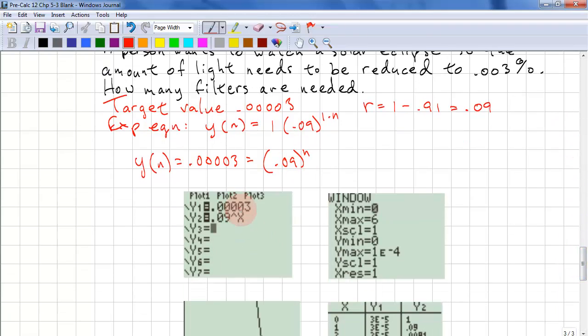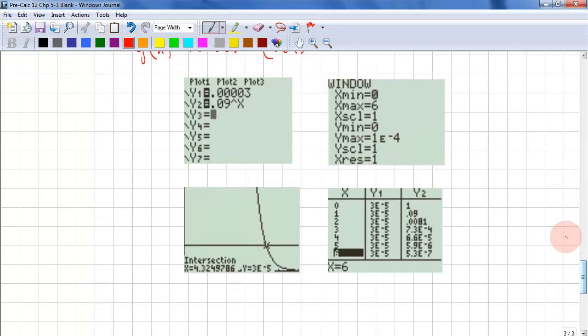equals 0.00003 equals 0.09 to the power of n. Again, we enter this on the calculator. y1, y2. And I'm just approximating that we need no more than six filters. So, our domain is 0 to 6. And since this target value is very small, I'm going to make the range 0.0001 which is 1 e to the minus 4. So, we plot this on the calculator. We find the intersection. We get this value. And if we look at 4 filters, we look at this value. And we get 0.006.